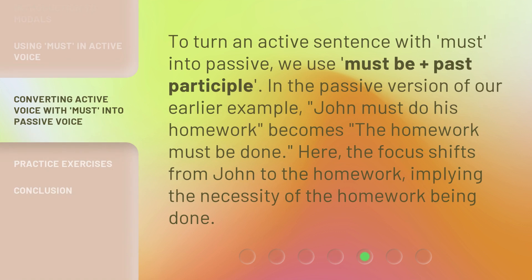To turn an active sentence with 'must' into passive, we use 'must be' plus past participle. In the passive version of our earlier example, 'John must do his homework' becomes 'The homework must be done.' Here, the focus shifts from John to the homework, implying the necessity of the homework being done.